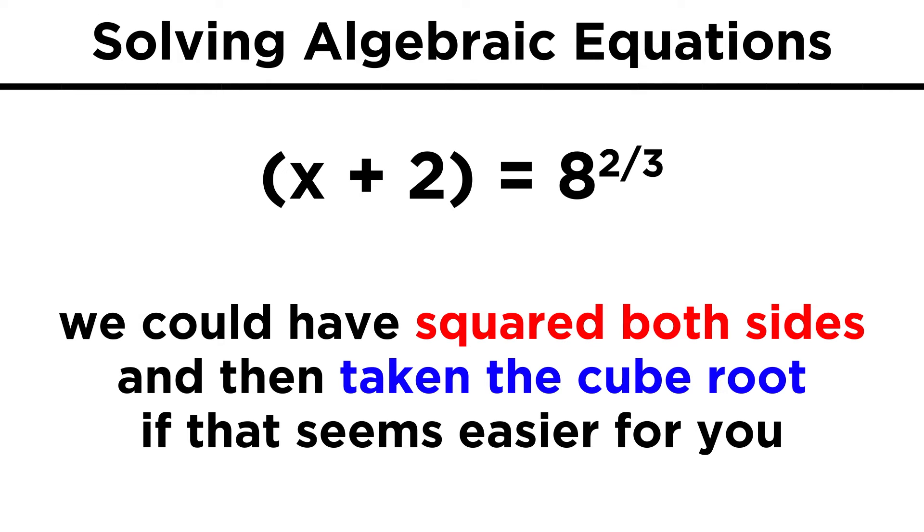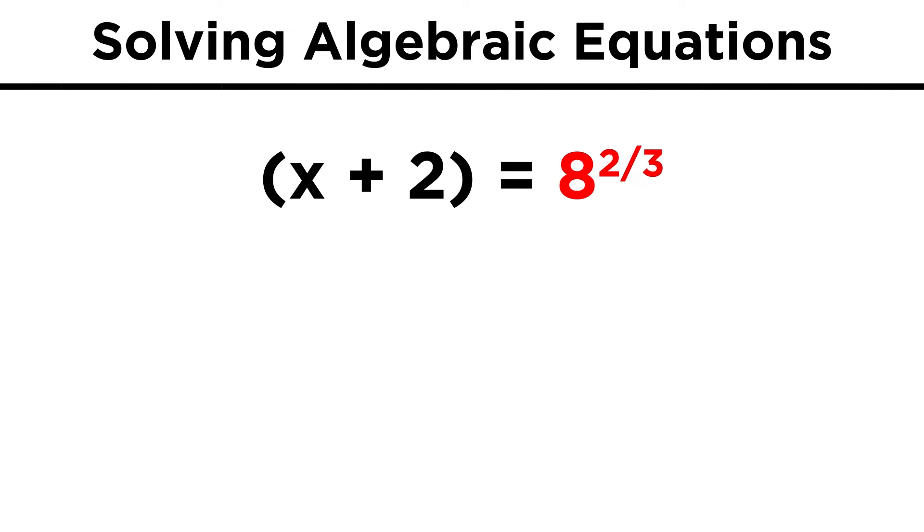Another way to do it would be to square both sides and then take the cube root, but why do two steps when you can do one? Now on the right, we have eight to the two-thirds. This we can just evaluate by taking the cube root, which is two, and then squaring to get four. Now we are left with x plus two equals four, so we just subtract two from both sides to get x equals two.